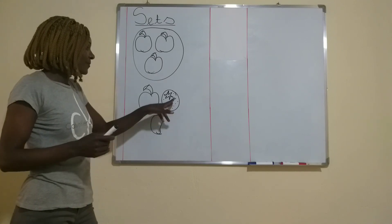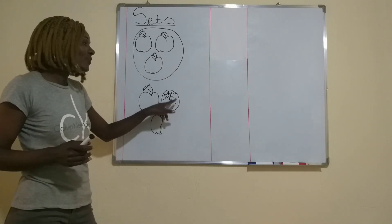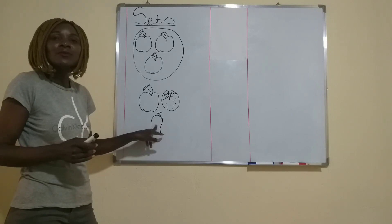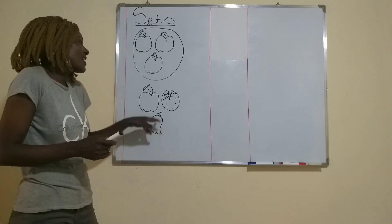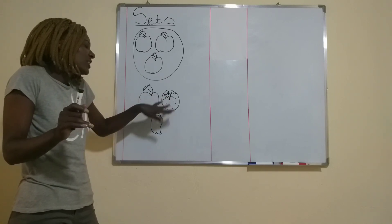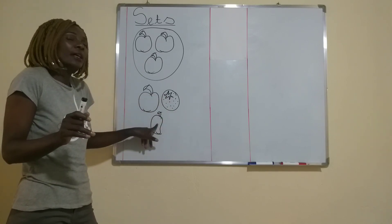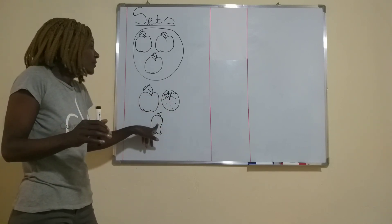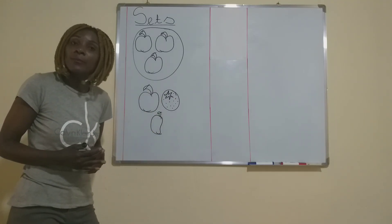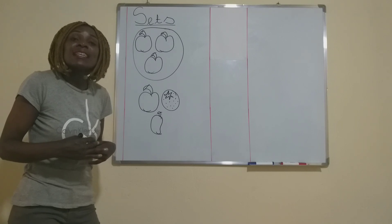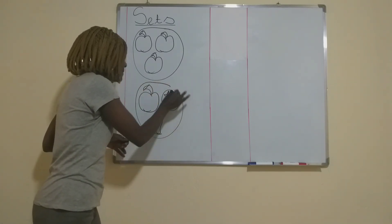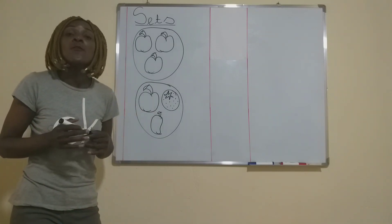We have an orange, an apple, we also have a mango. We are not going to say this is a set of apples, because there is also orange and mango. All these things together, what do we call them? We call these fruits. So they make a set of fruits.